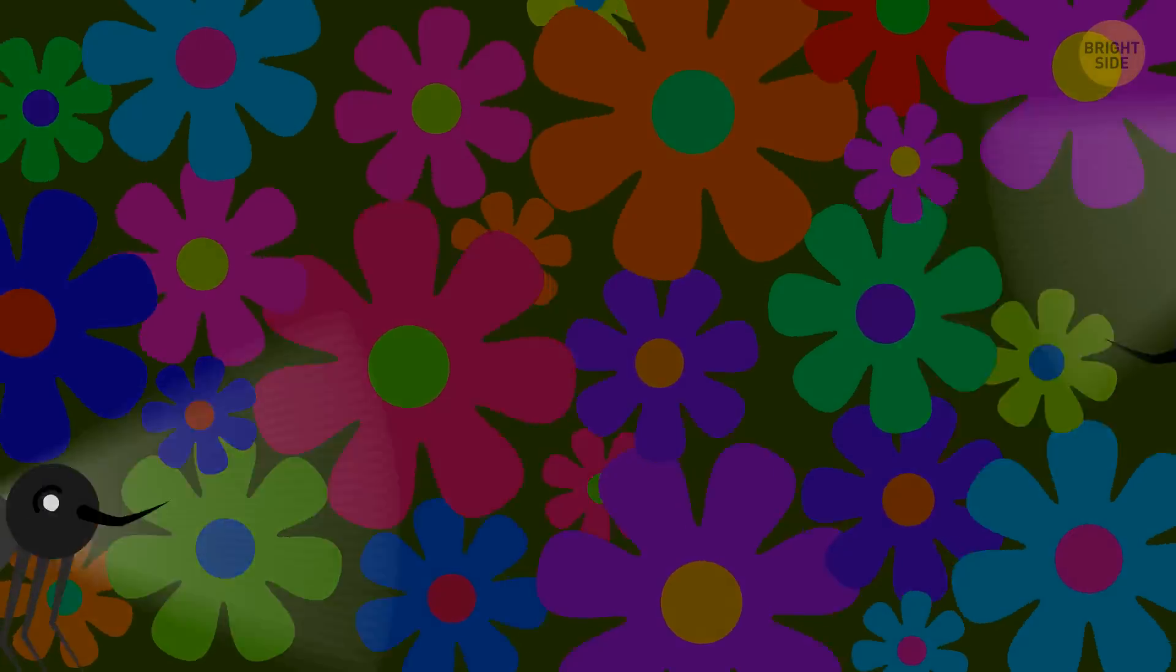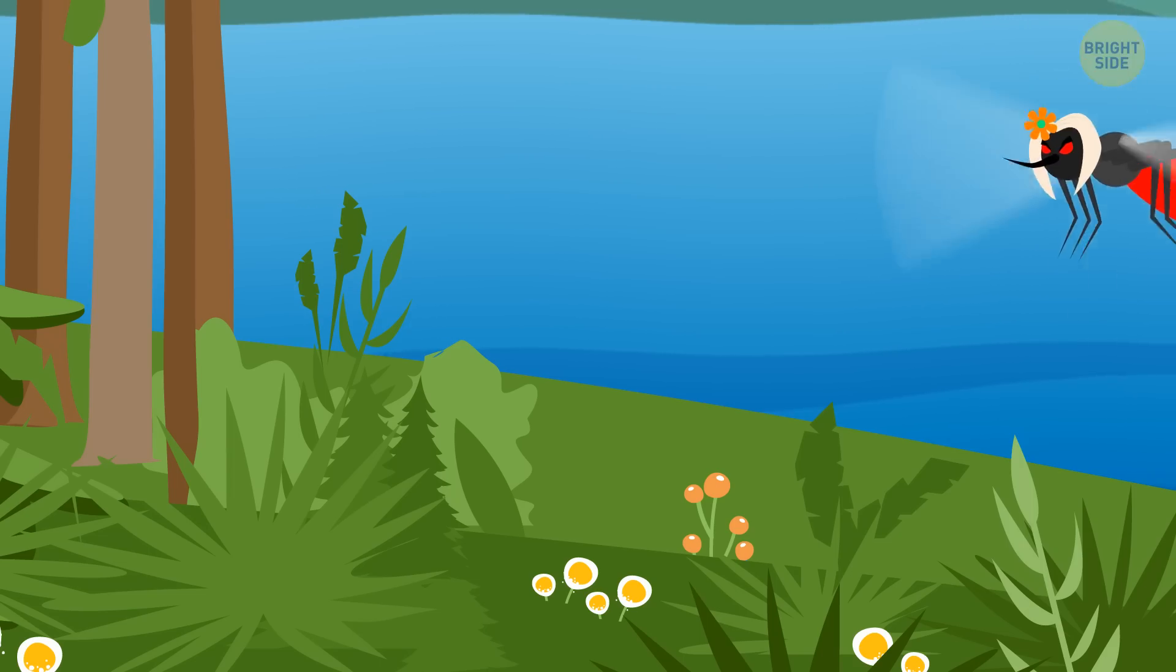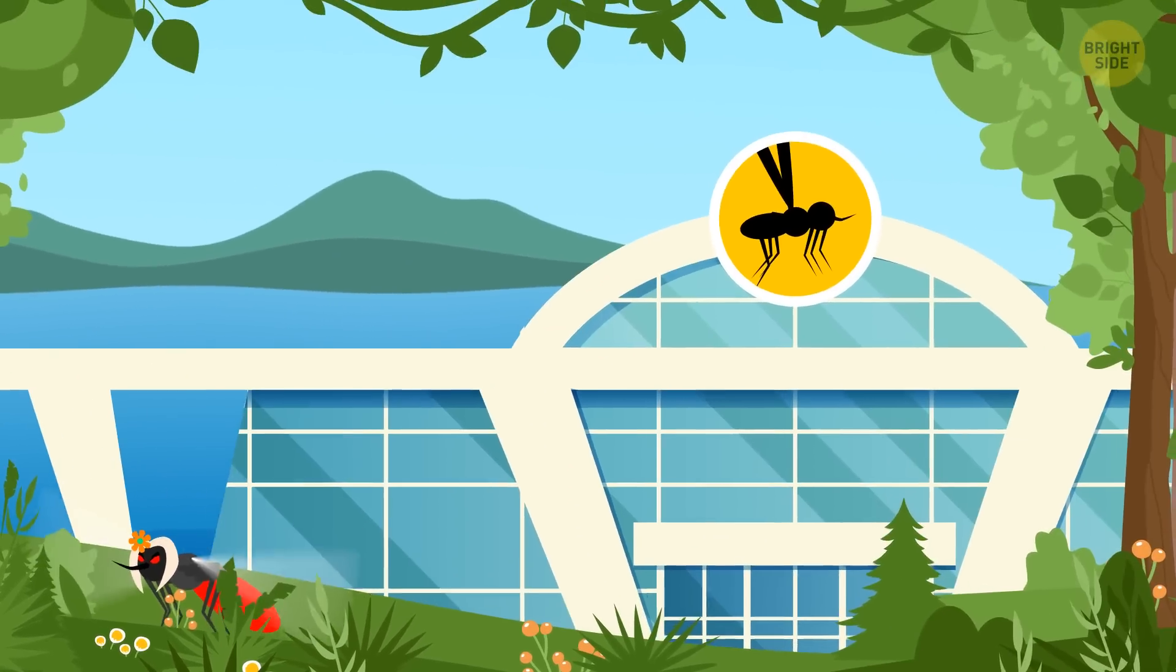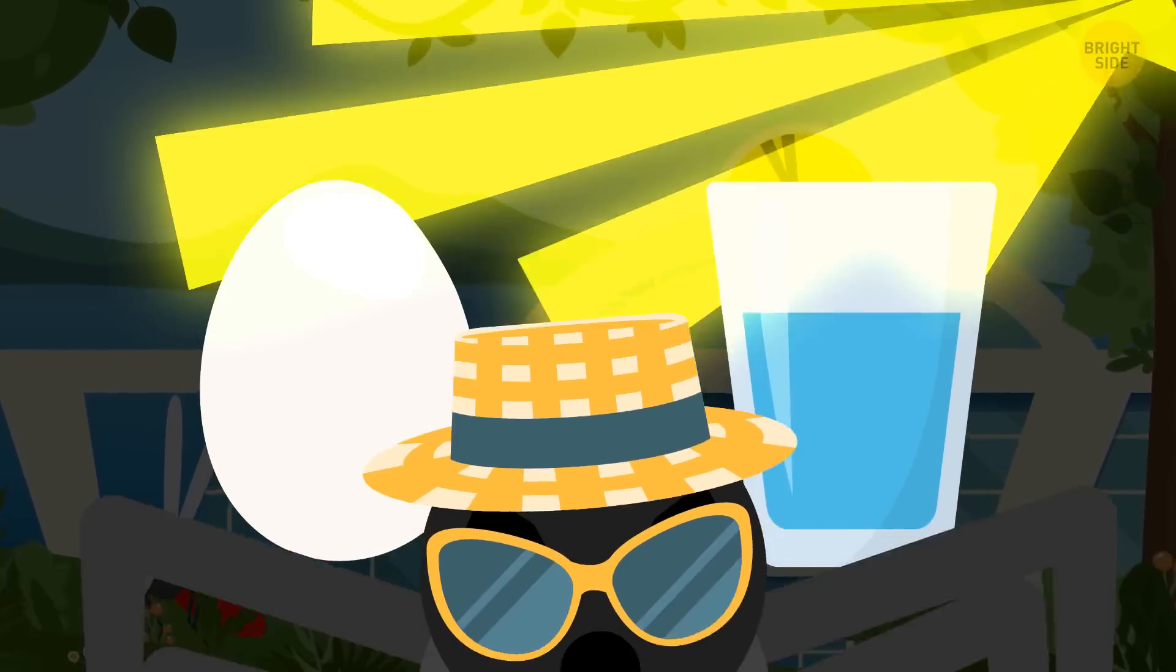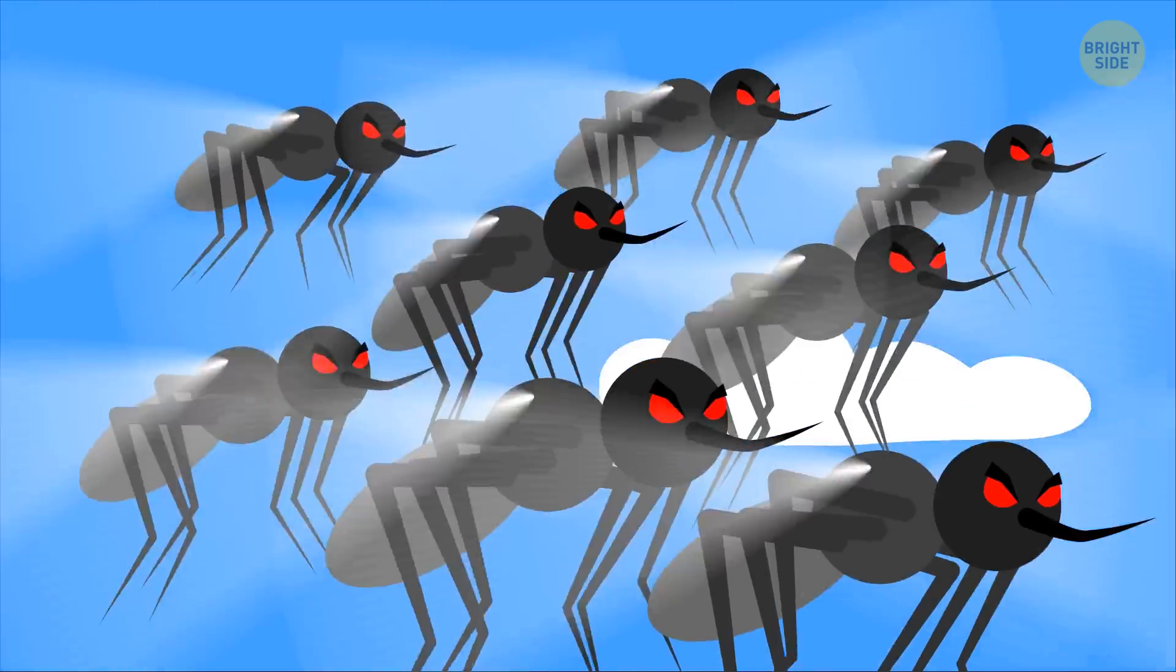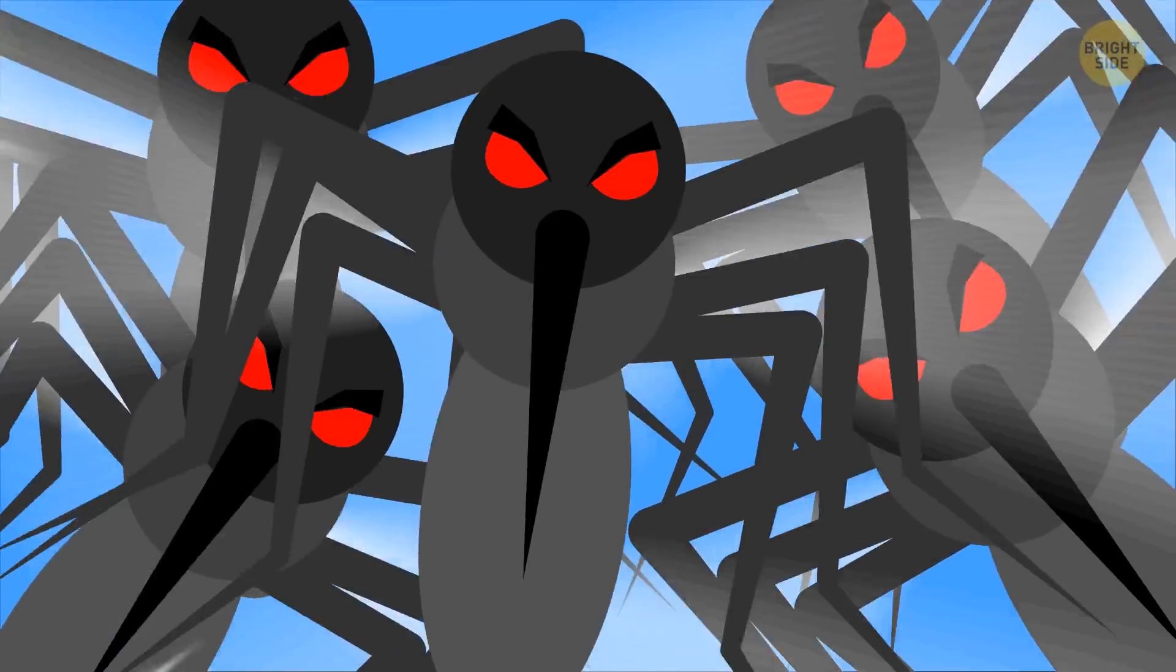So the female mosquito flies away from Barry. She sits down on the shore of the lake, where a large mosquito base is located. Here, these insects lay eggs, drink water, and chill in the sun. There are several hundred thousand of them, and they're all hungry. The female mosquito brings with her the smell of Barry's sweat, which is attractive to the rest of the mosquitoes, too.